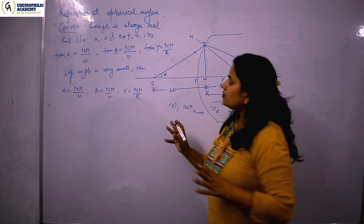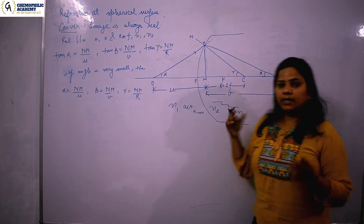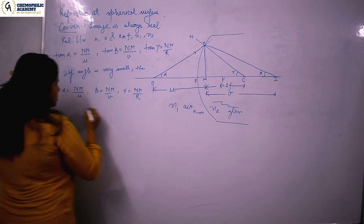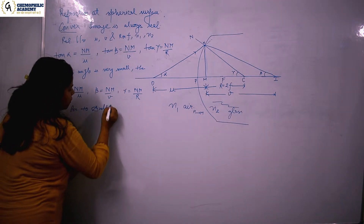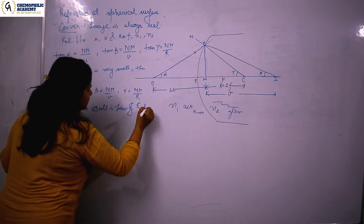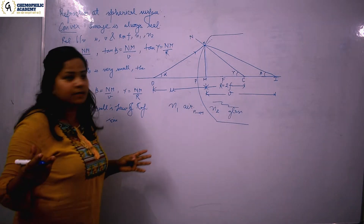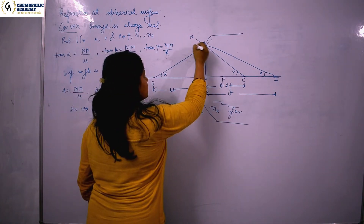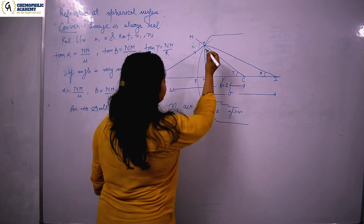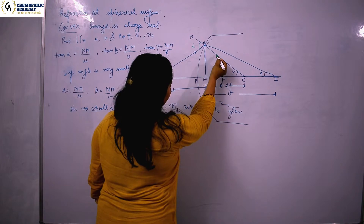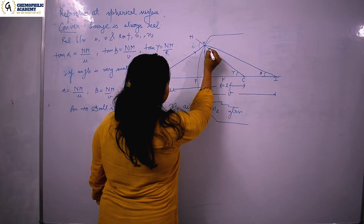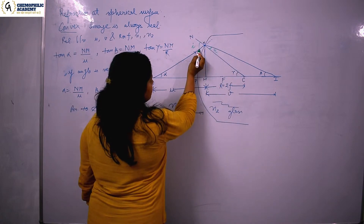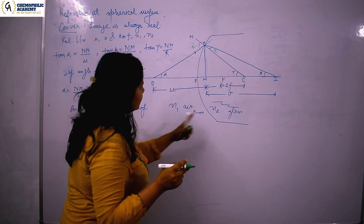Now, this process is refraction, so we have to use the property of refraction. According to Snell's law of refraction, sin i / sin r = n2 / n1. Here, the incident ray and the normal define angle i, and the refracted ray gives angle r. So medium 1 is on one side and medium 2 is on the other.